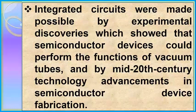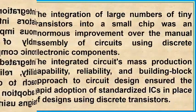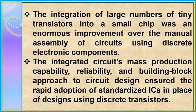Integrated circuits were made possible by experimental discoveries which showed that semiconductor devices could perform the functions of vacuum tubes, and by mid-20th century technology advancements in semiconductor device fabrication. The integration of large numbers of tiny transistors into a small chip was an enormous improvement over the manual assembly of circuits using discrete electronic components. The integrated circuit's mass production capability, reliability, and building-block approach to circuit design ensured the rapid adoption of standardized ICs in place of designs using discrete transistors.